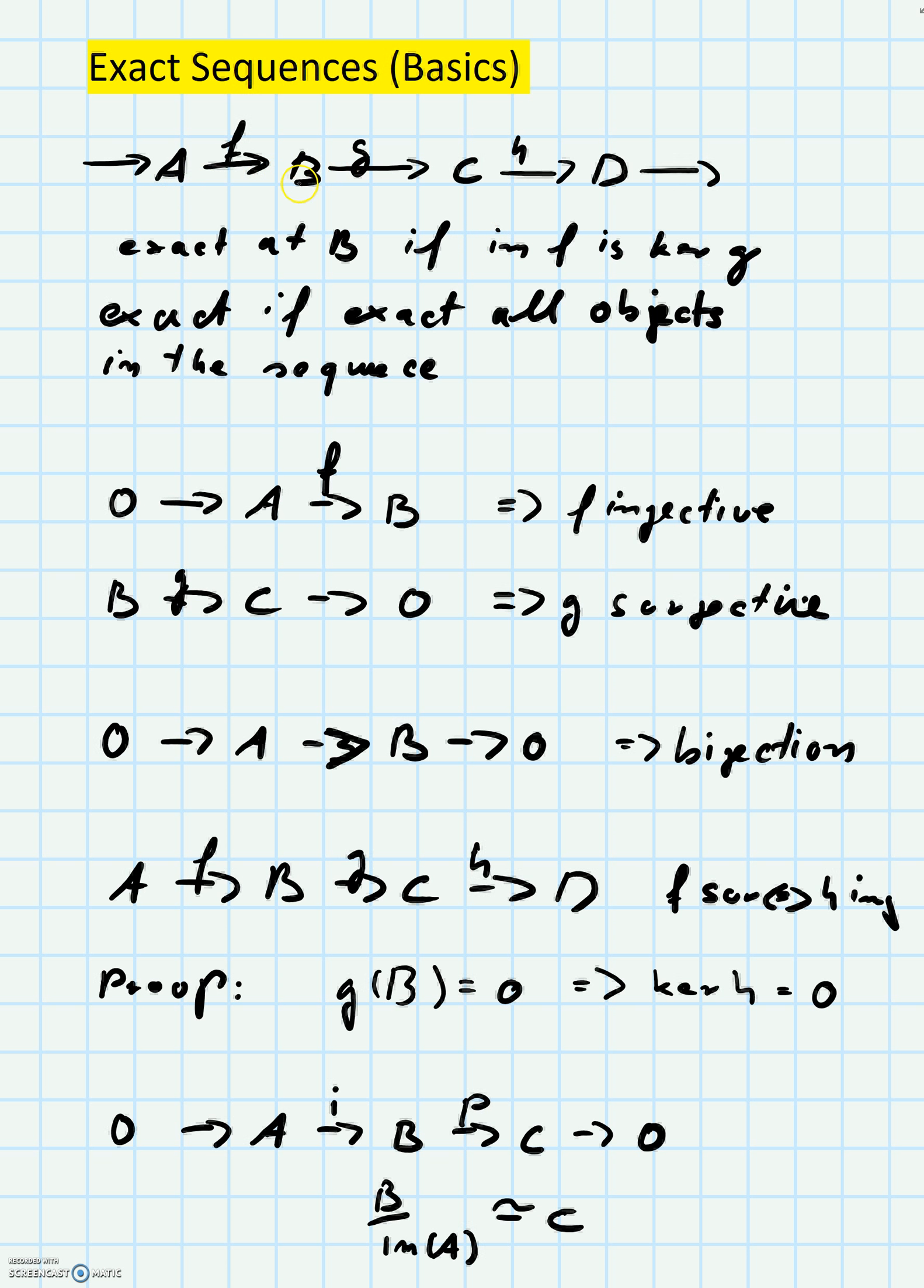So assume you have a sequence of objects A, B, C, D and so on. This can be an infinite sequence - I've just named a few objects here. You have morphisms from A to B, from B to C, from C to D, and so on. Suppose you're in a category such that you can make sense of the image of a morphism and the kernel of a morphism.